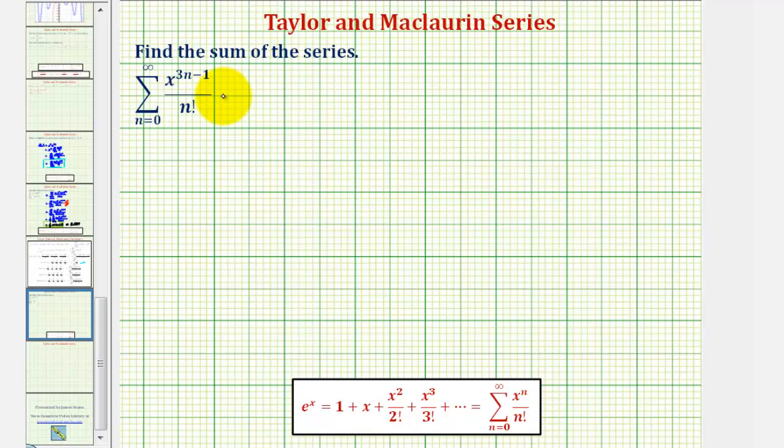So if we multiply the numerator and denominator by a factor of x, this would give us the summation from n equals zero to infinity of x raised to the power of 3n minus 1 plus 1, which would be x to the power of 3n divided by,